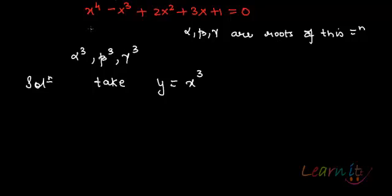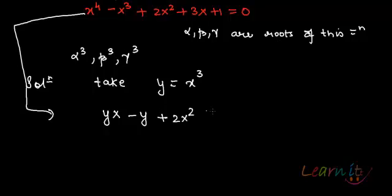If I take y as x cube, then I can write my previous equation. From the original equation I get, I can put in place of x cube y. So yx will be left. So here I will have yx - y + 2x^2 + 3x + 1 = 0.